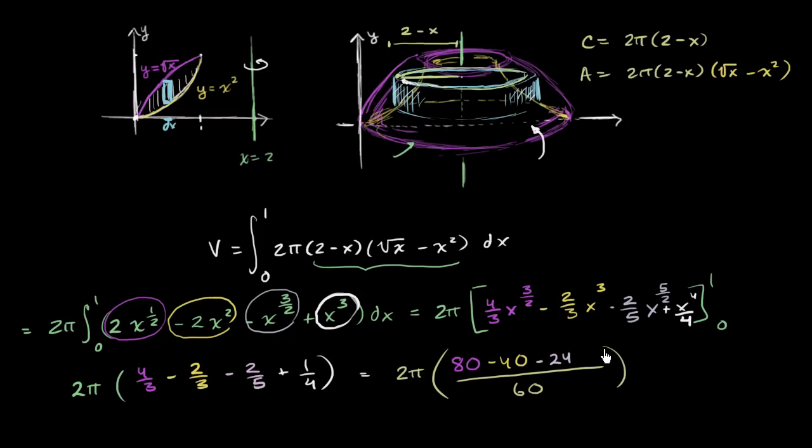So this is equal to, and actually this will cancel over here, and you just get a 30 in your denominator.